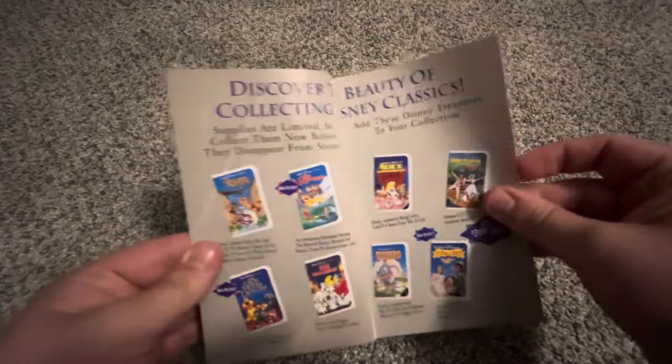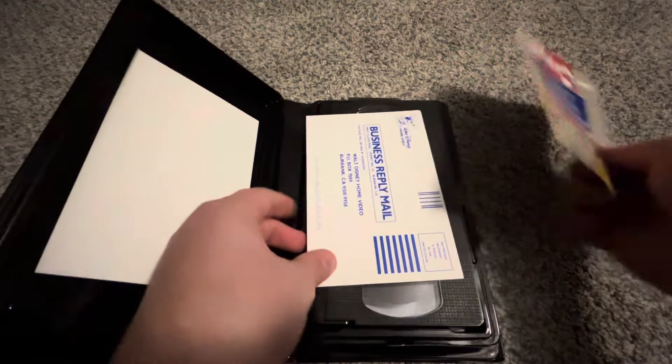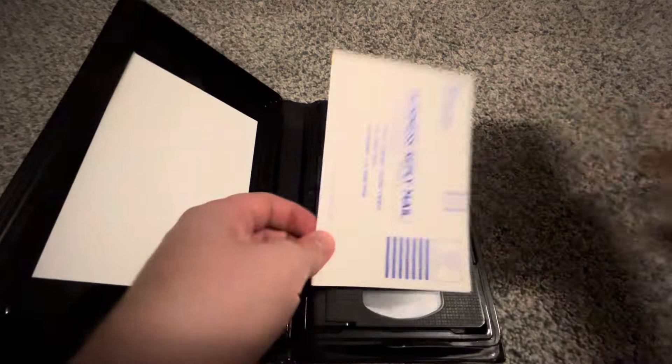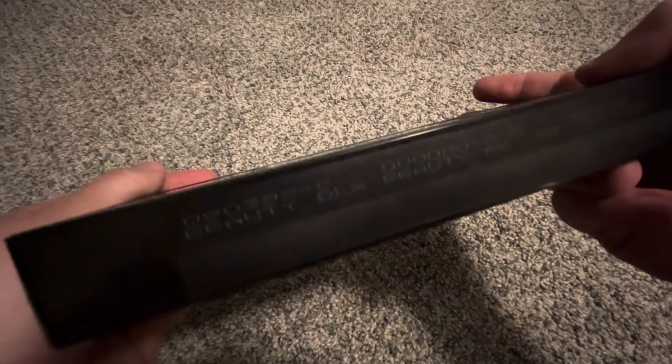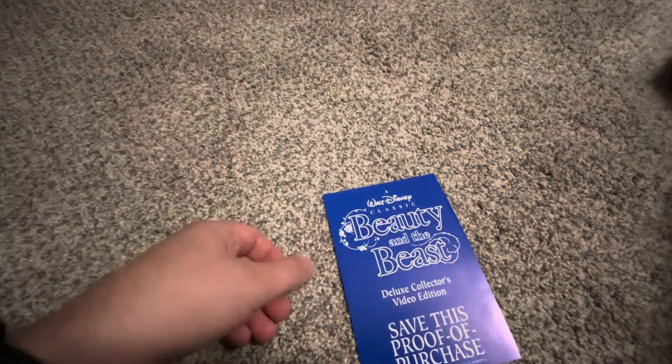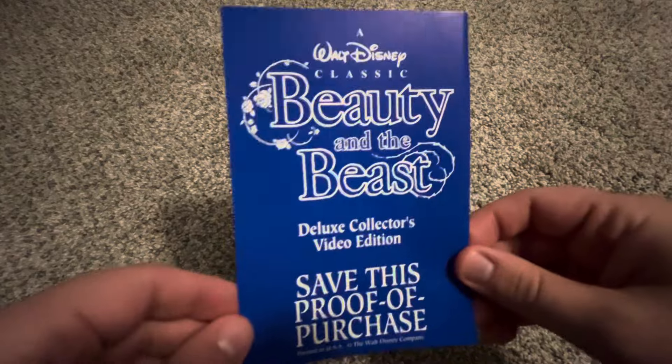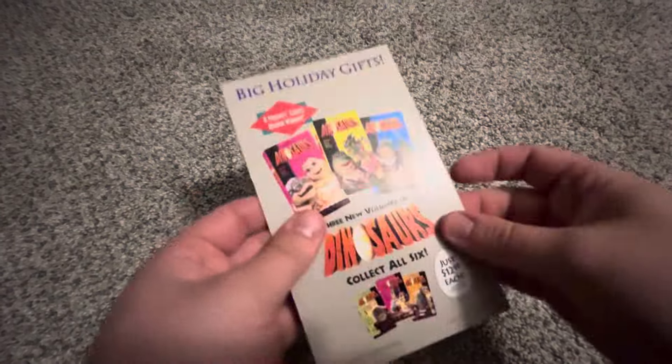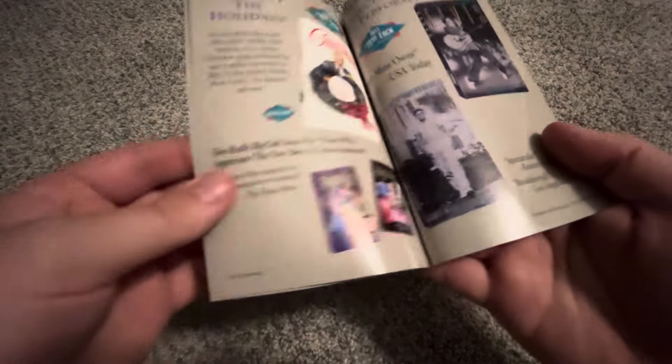And here are the promo stuff that come with this copy. Now this is a coupon. This is something for Pizza Hut. And a Nabisco coupon. And another coupon. And this is the last thing that comes with this copy. This is a business reply card.